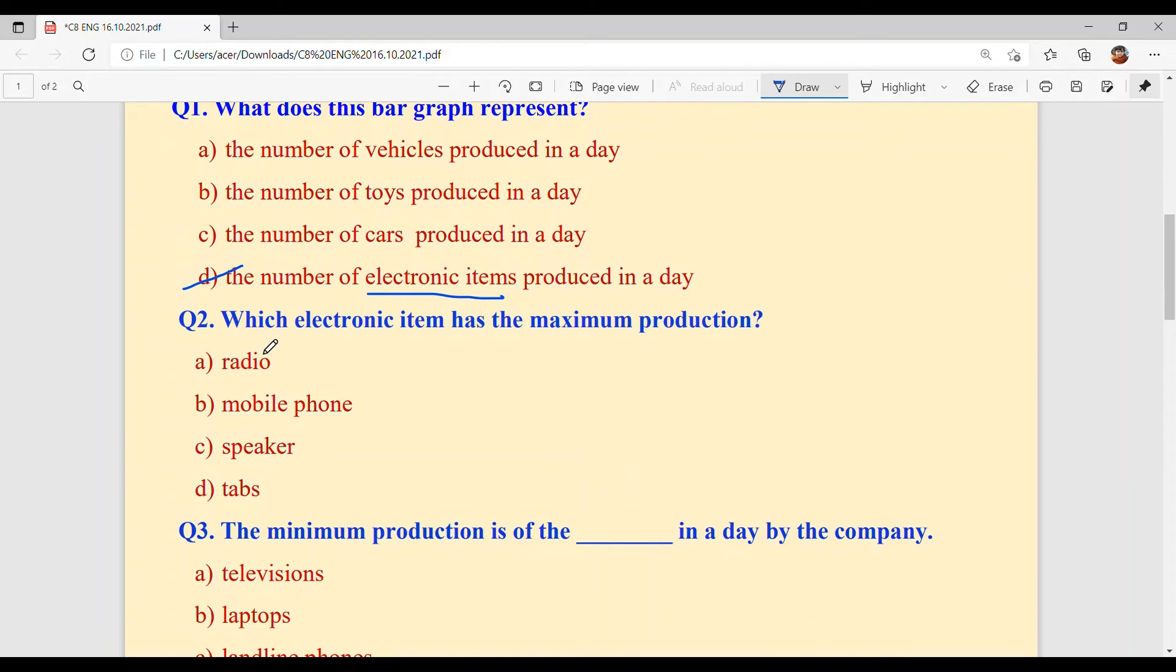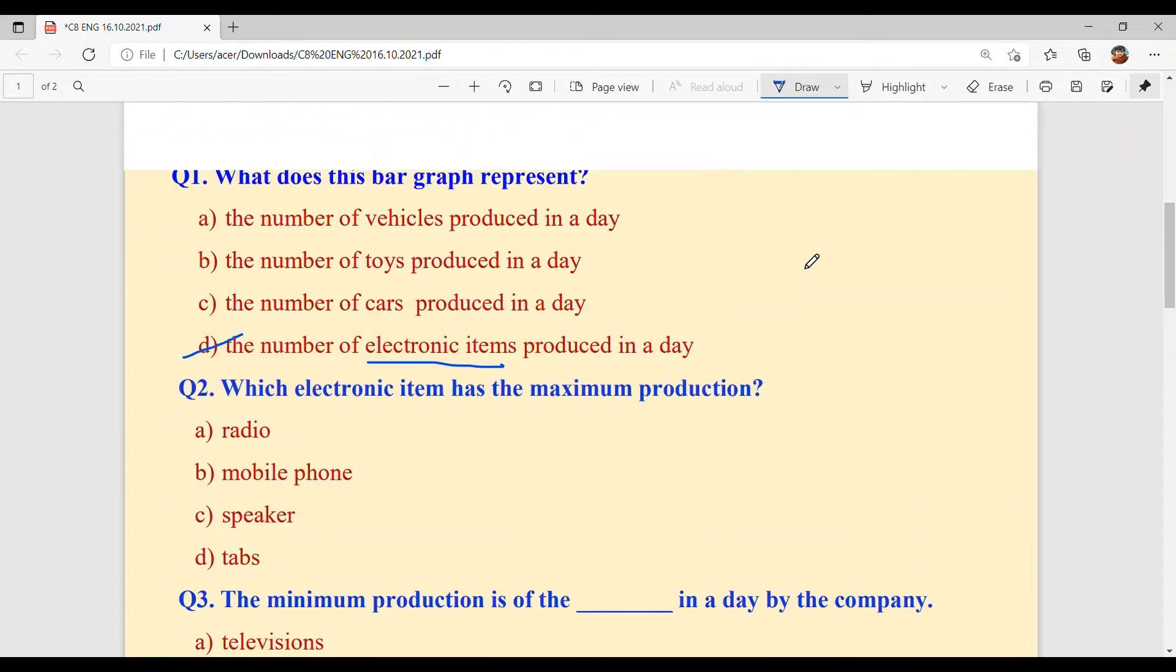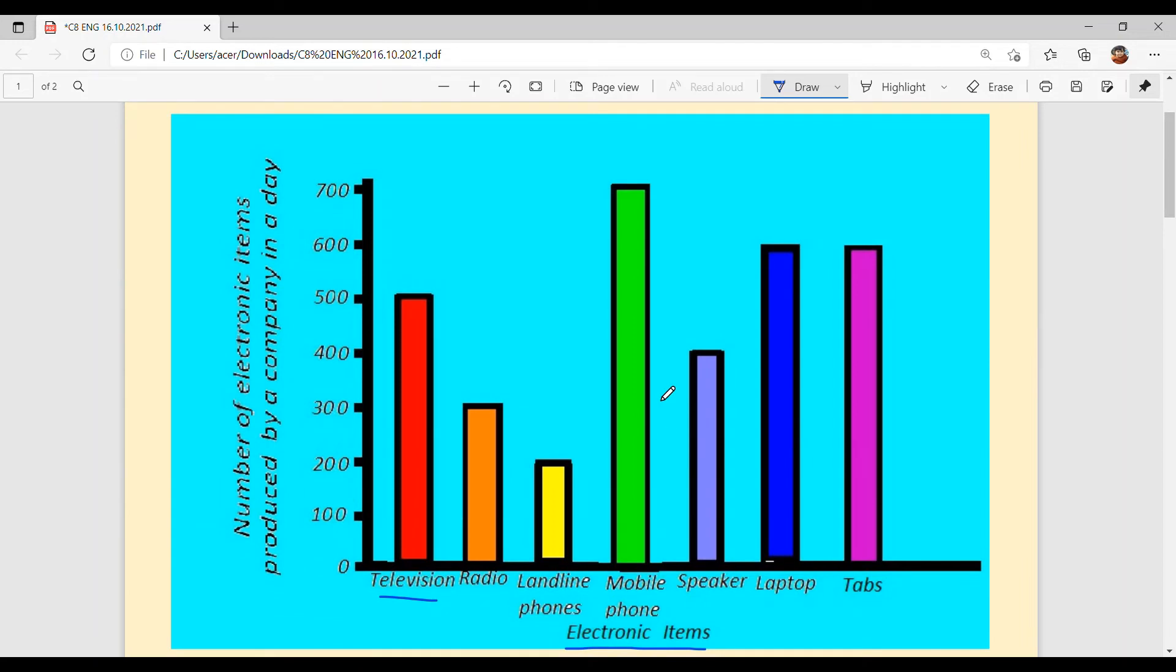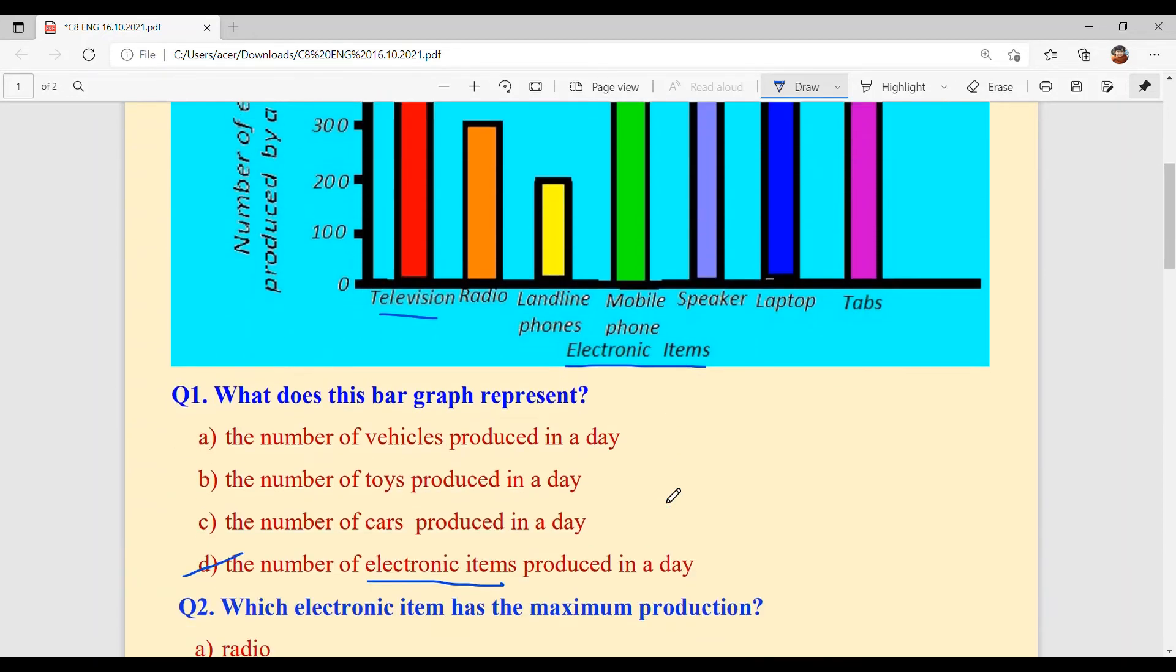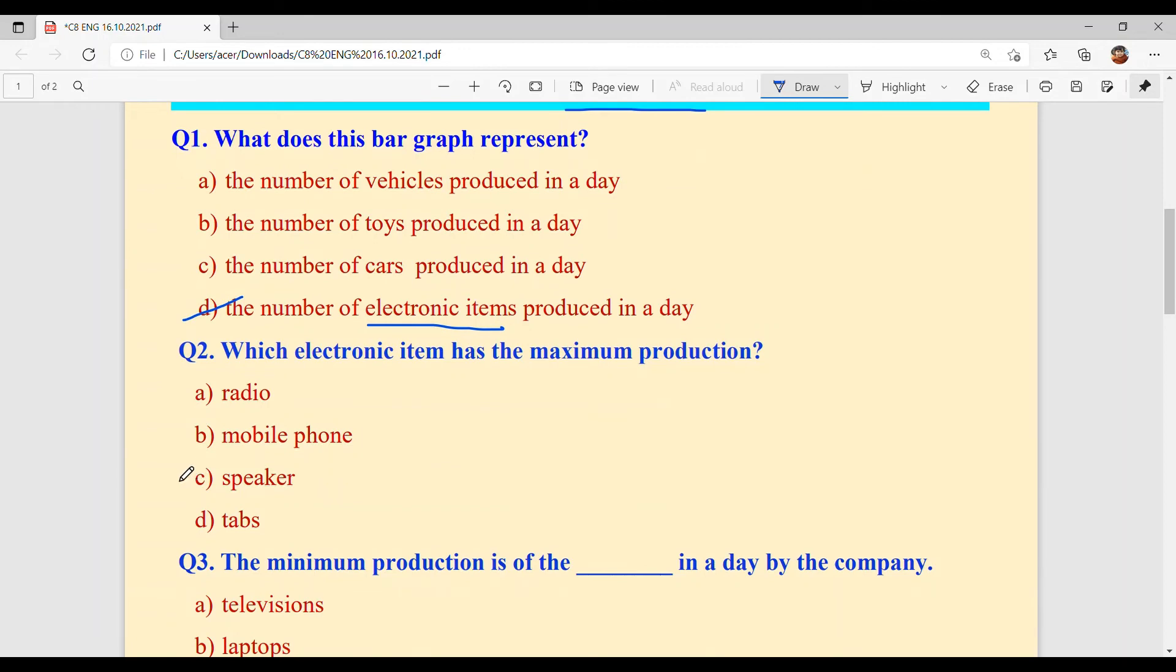Question number two, which electronic item has the maximum production? The electronic item with maximum production was mobile phones. Obviously, because at this time, you are likely watching this video on a mobile phone. So, option B, mobile phone.